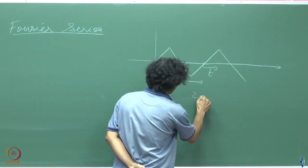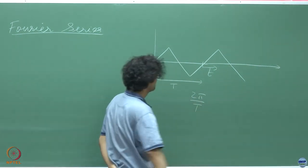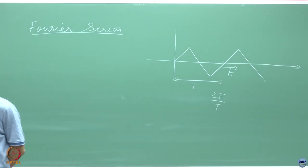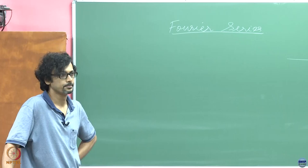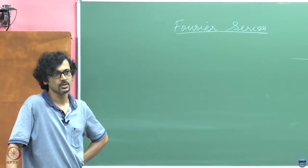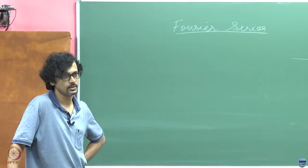So 2π by T. What kind of sinusoid and cosinusoid make their appearance when you write this as a Fourier series? Integral multiples of this frequency, yeah?